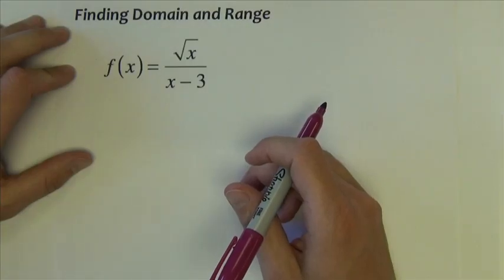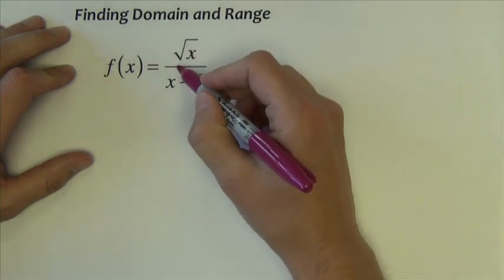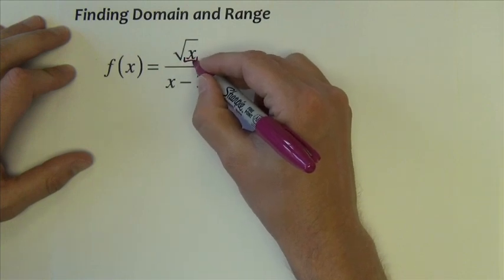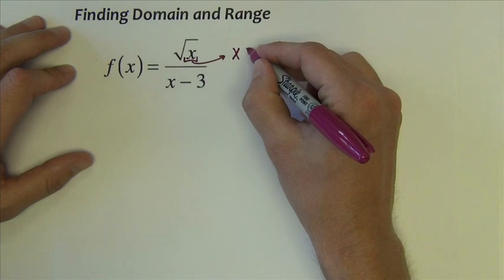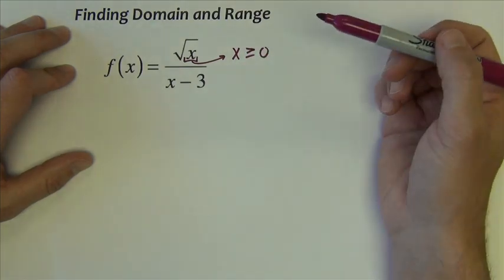And the next problem, again finding domain and range, we again begin with this square root piece on top. And because there's an x underneath the square root, we know that x has to be greater than or equal to zero. We can't do negative numbers.